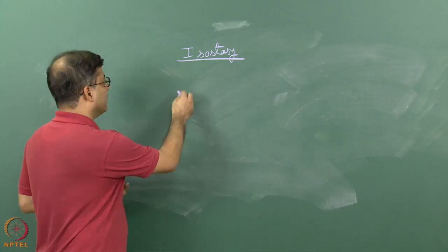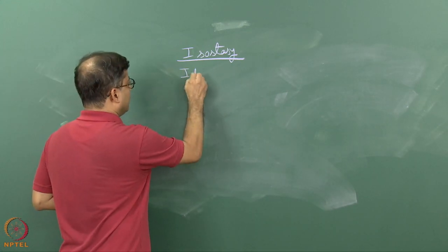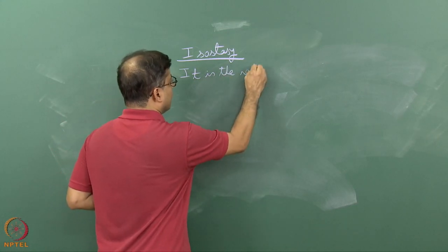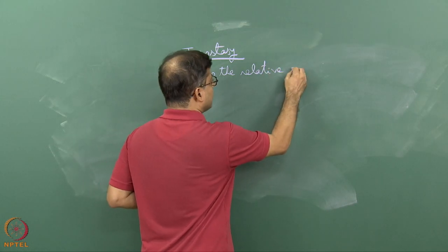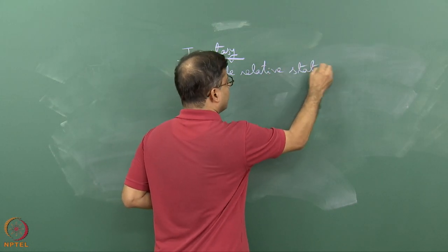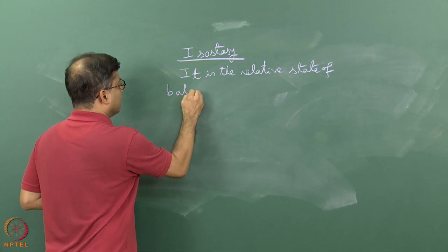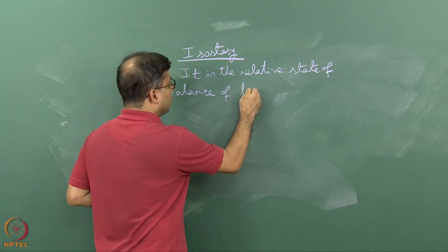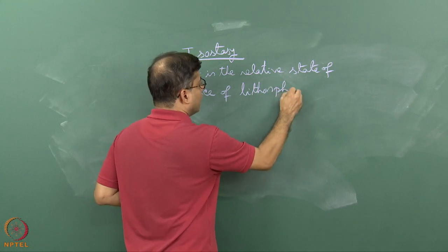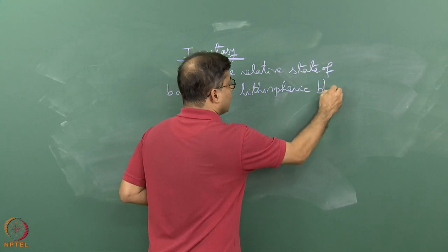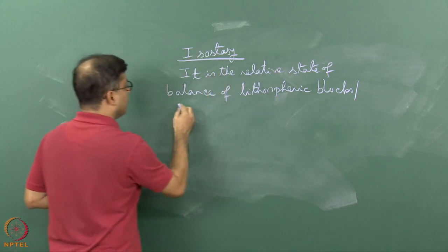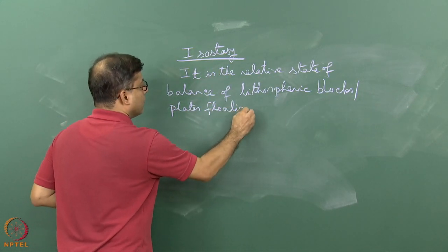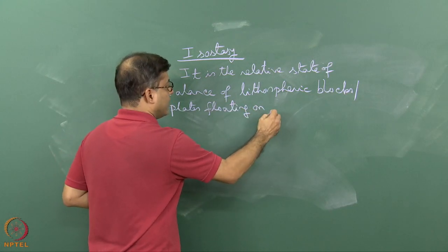So the recent definition is: isostasy is the relative state of balance of lithospheric blocks, also called plates, floating on the asthenosphere.